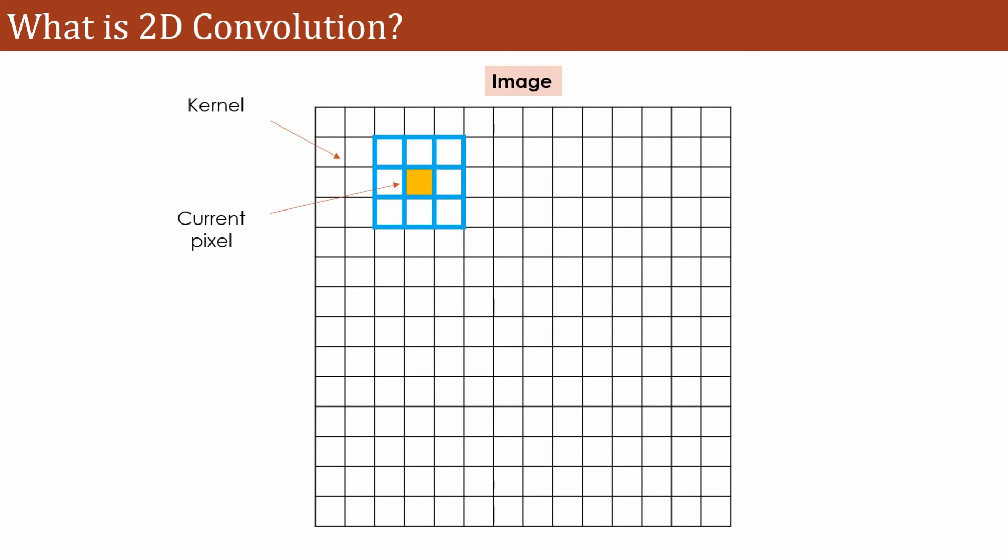A question may arise: do we need to have a for loop that the kernel will go through all the pixels in the image? No, there is no such requirement. Thanks to the OpenCV library, using a simple function filter2D, we can have the kernel go through all the pixels of the image and it changes the value.